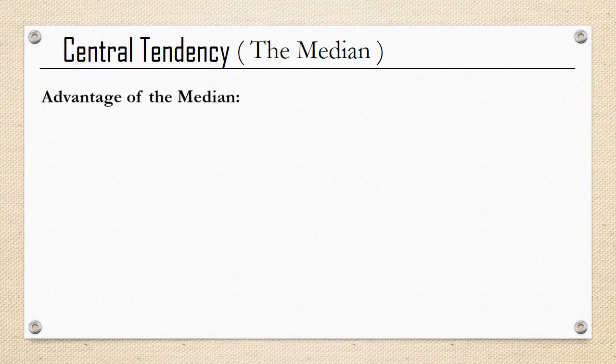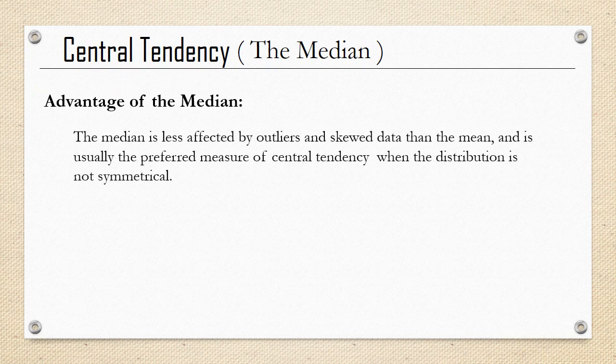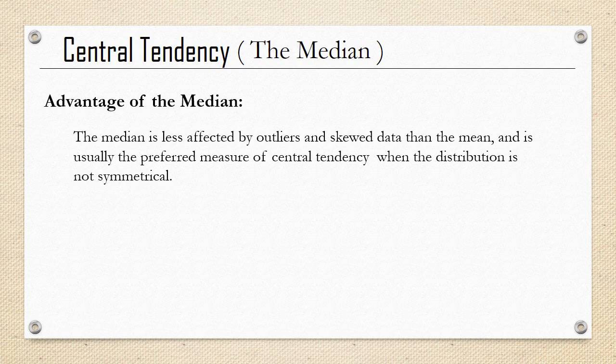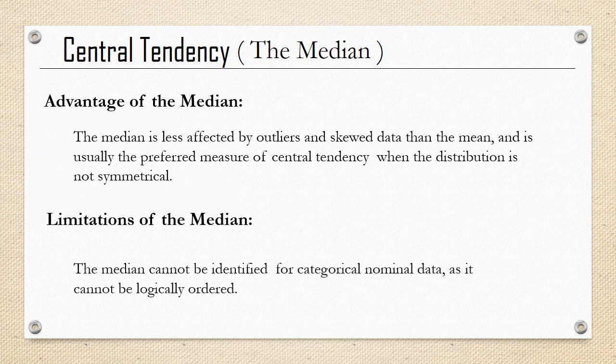The advantage of the median is that the median is less affected by outliers and skewed data than the mean, and is usually the preferred measure of central tendency when the distribution is not symmetrical. Limitations of the median: the median cannot be identified for categorical nominal data as it cannot be logically ordered.